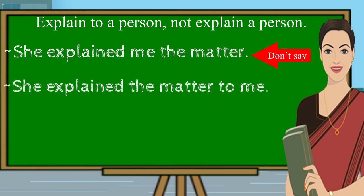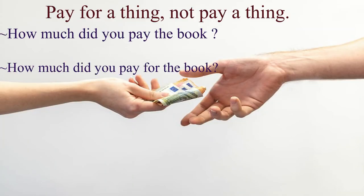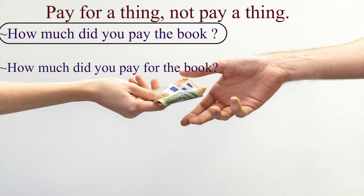In this sentence, there is an object which we have to explain to someone else. Please note that the word 'explain' is not followed by an object pronoun like me, him, her, you, or us. Now please read the next sentence: 'How much did you pay the book?'